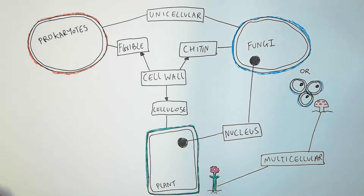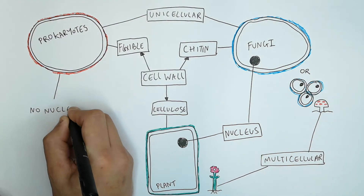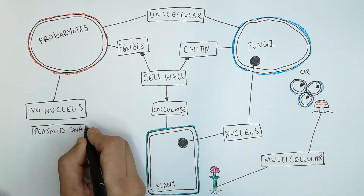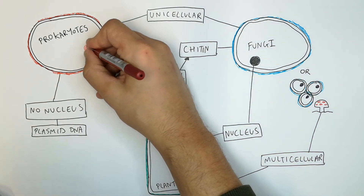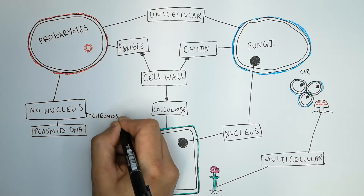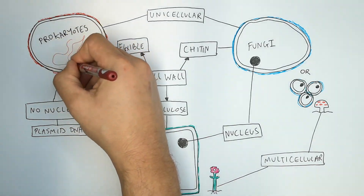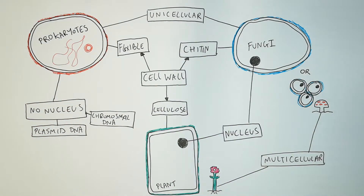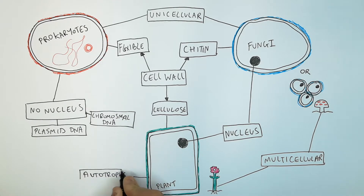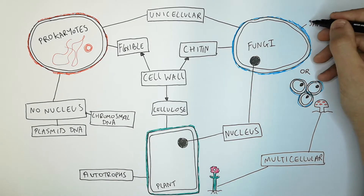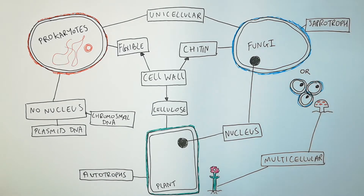Prokaryotes like bacteria have no nucleus — that's a defining feature. Instead, they have plasmid DNA, which is a circular piece of DNA, and they also have free chromosomal DNA in the cell itself. Plants are autotrophs — they make their own food via photosynthesis. Fungi are saprotrophs, which means they take nutrients from dead material.